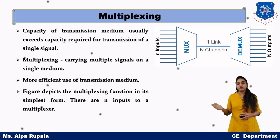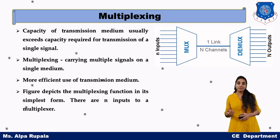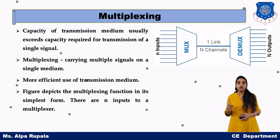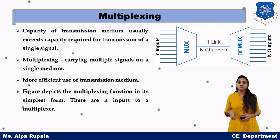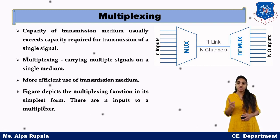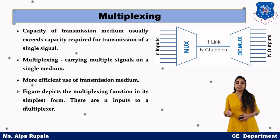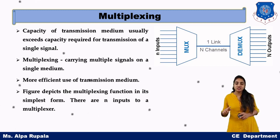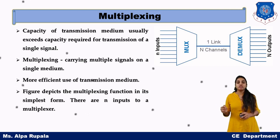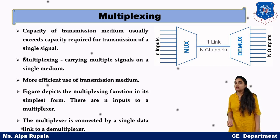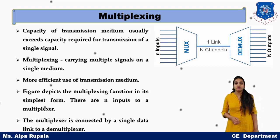In the figure, we can see that N number of inputs are multiplexed into a single link and sent over a single channel. At the receiver side, we demultiplex the signal and send the original data to the correct recipient. This is the process of multiplexing.